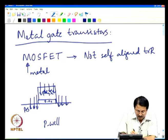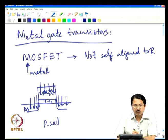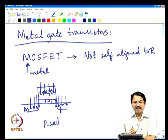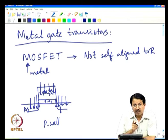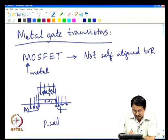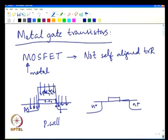Notice that when you are done with all these junctions, the junction is sort of self-aligned to the edge of the gate. Subsequently there is an annealing process, and because of annealing these dopants diffuse in and also a little bit laterally, but they are more or less aligned to the edge of the gate. You do not want a transistor where the gate does not overlap the source and drain.